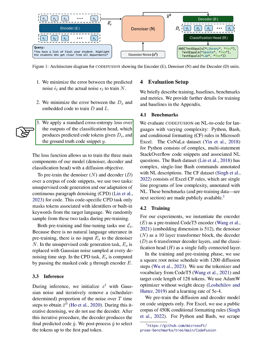Lastly, we apply a standard cross-entropy loss over the outputs of the classification head, which produces predicted code tokens given the decoder's hidden representation and the actual code snippet.